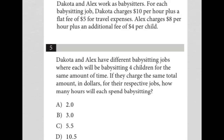The information provided before question five says Dakota and Alex work as babysitters. For each babysitting job, Dakota charges $10 per hour plus a flat fee of $5 for travel expenses. I'm going to use H to represent hours, so Dakota's charge is 10H plus 5 — you always charge five, but the number of hours gets multiplied by 10. I'll say D equals that.